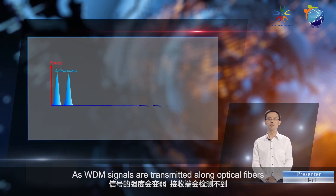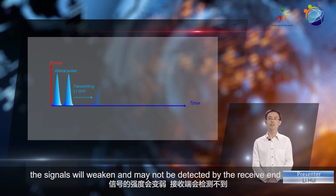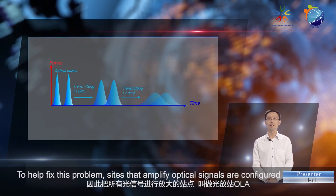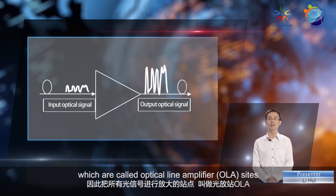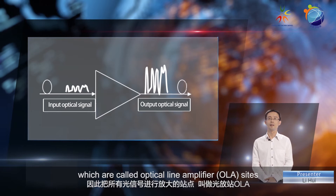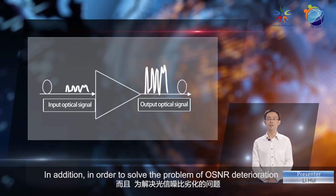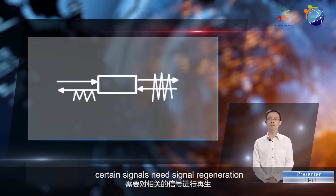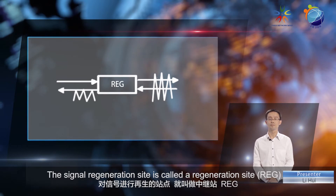As WDM signals are transmitted along optical fibers, the signals will weaken and may not be detected by the receive end. To help fix this problem, sites that amplify optical signals are configured, which are called optical line amplifier sites. In addition, in order to solve the problem of OSNR deterioration, certain signals need signal regeneration. The signal regeneration site is called a regeneration site.